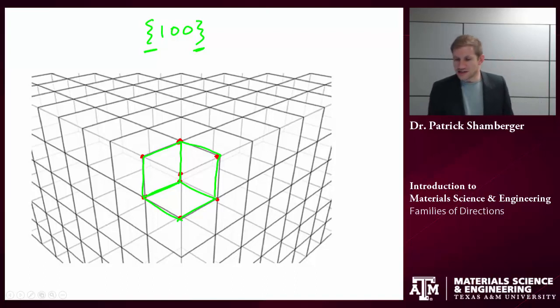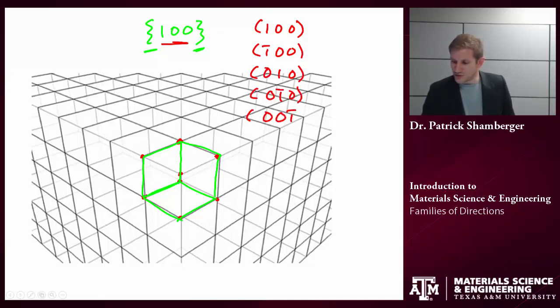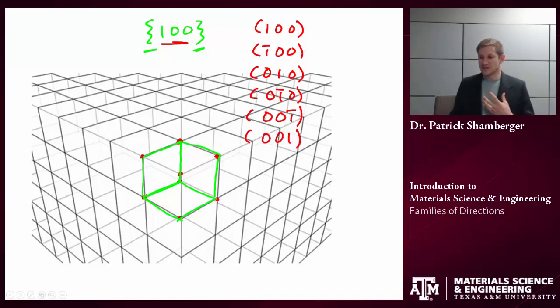So cubic systems are nice because if you want to say what are the family of directions or planes in that cubic system, you can reorder any of the indices and you can switch them from positive to negative. So the six planes in the 1, 0, 0 family of planes would be the six that I can obtain just by reordering the arrangement of the indices and switching any of them from positive to negative. And that's a shortcut, but that only works for cubic systems.